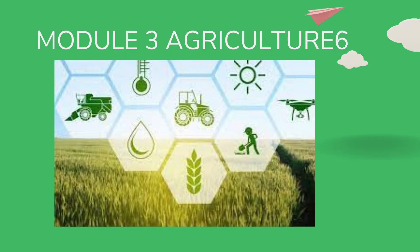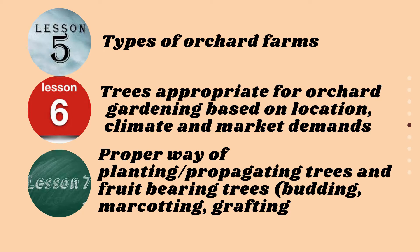Good day kids, here we are again with our new lesson in TLE 6, Module 3, Agriculture 6. This is Teacher Sandy Cinco. We have three lessons in Module 3: Lesson 5 - types of orchard farms and trees appropriate for orchard gardening based on location, climate, and market demands; Lesson 6 - proper way of planting and propagating trees; and Lesson 7. In this video we will discuss Lessons 5 and 6 only. Lesson 7 will be discussed in the next video.